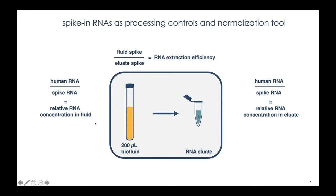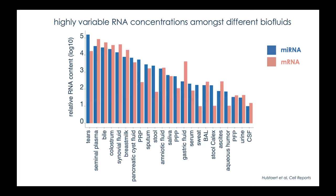One of the things that became very clear when looking at relative RNA concentration across these fluids is that we observe highly variable levels of RNA among the different fluids. When looking at classic fluids like plasma, serum, or urine, some of the other fluids we had not analyzed before actually contained quite a bit more RNA — sometimes 10, 100, or even up to a thousand times more RNA — in samples like human tears, seminal plasma, colostrum, and pancreatic cyst fluid.